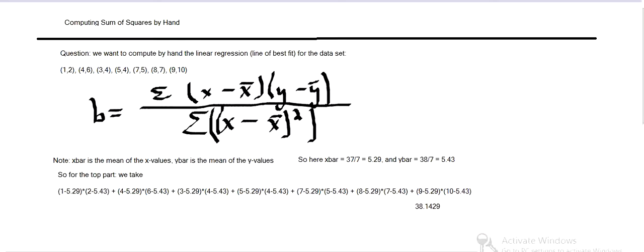And then for the denominator, it's almost the same except we're just taking the x values and multiplying them by themselves. So that x minus x bar, 1 minus 5.29 times 1 minus 5.29 to start out. And then we multiply those, and for each one, 4, then 3, then 5, and so on, minus the mean. Then add up. That gives the sum of the squares of the x values.